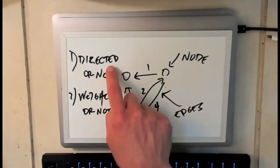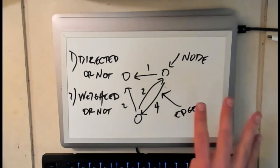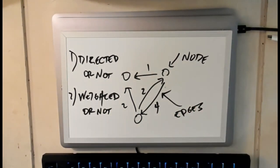So directed or undirected, weighted or unweighted. And so that gives us four different types of graphs. We can have directed unweighted graphs, we can have directed weighted graphs, undirected weighted graphs, and undirected unweighted graphs.